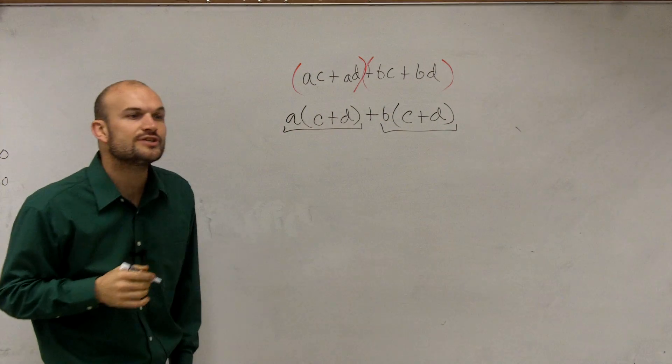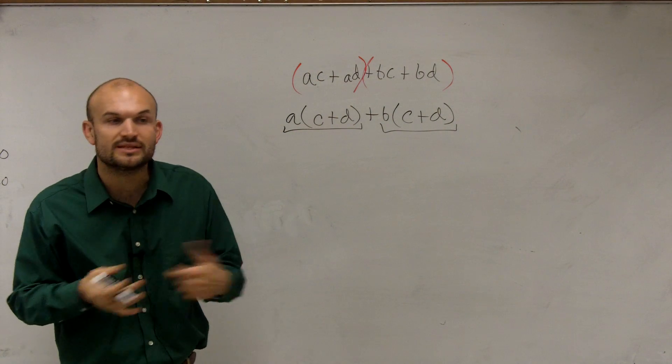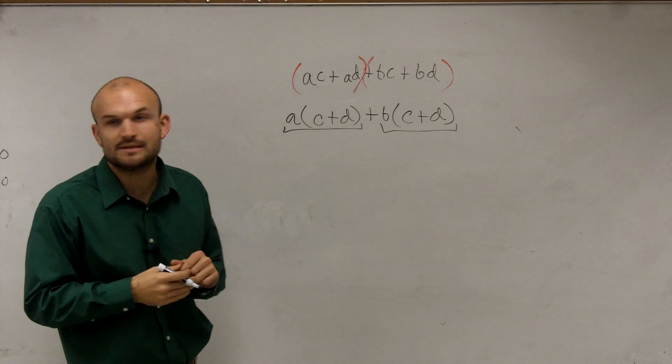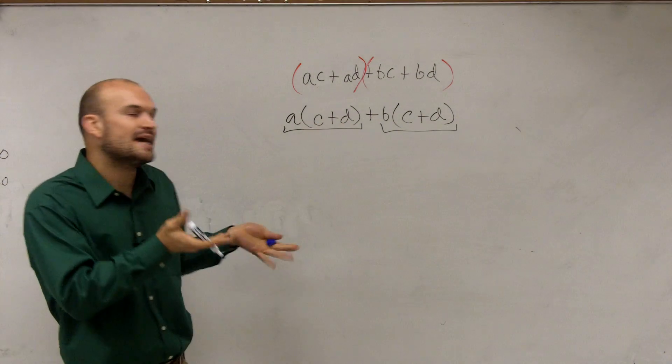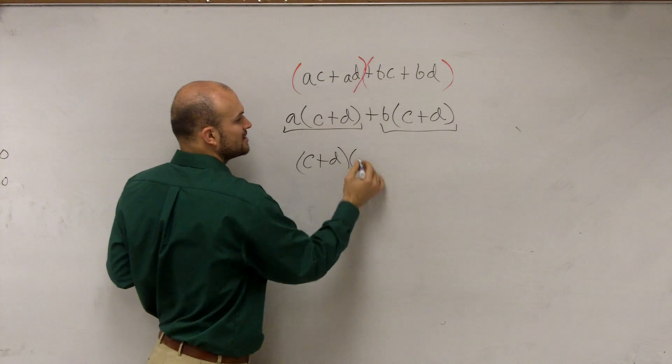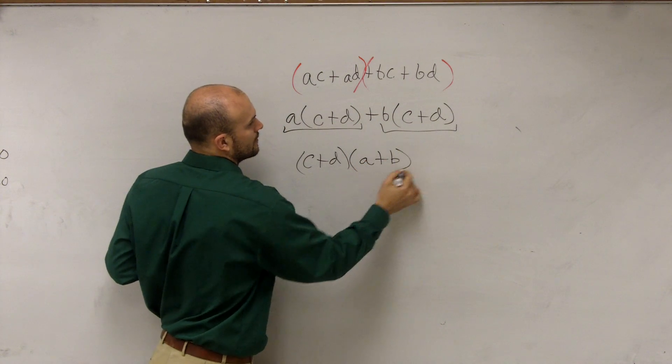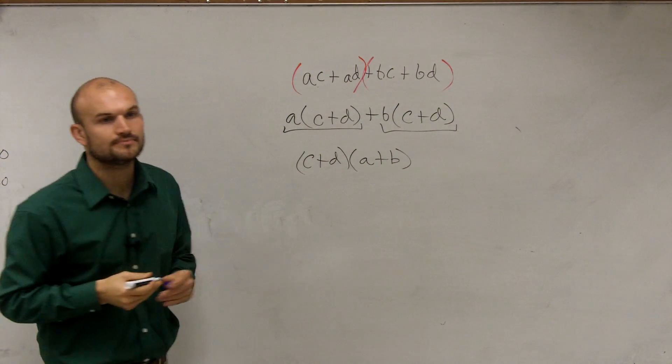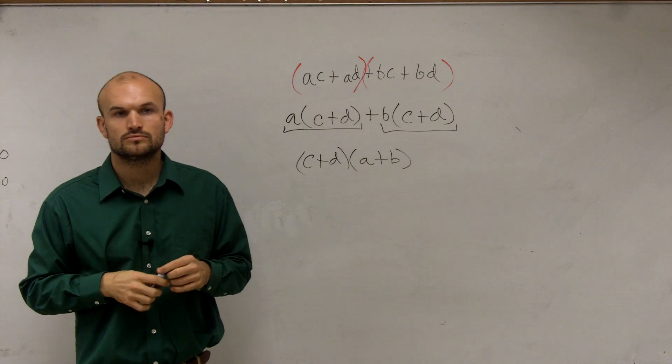And we need to look at this and say, do they share anything? And you notice, within the parentheses, they both have the C plus D. So now I can factor out C plus D, and that's now going to leave me with A plus B. And then that is going to be your factored form. Cool? Cool.